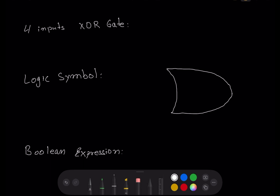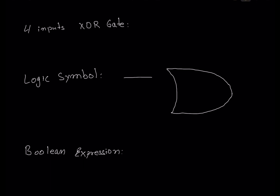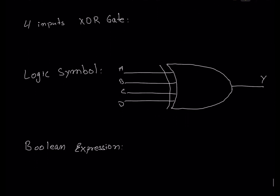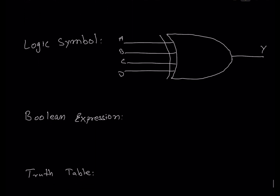Alright, now we have input one, input two, input three, and input four on the XOR gate. So input A, input B, input C, and input D — the output here will be called output Y. That's your logic symbol for the four-input XOR gate.